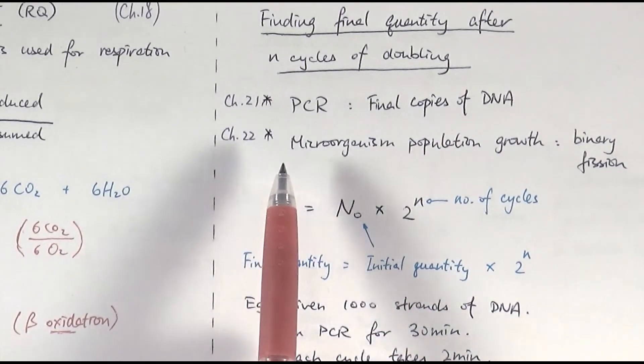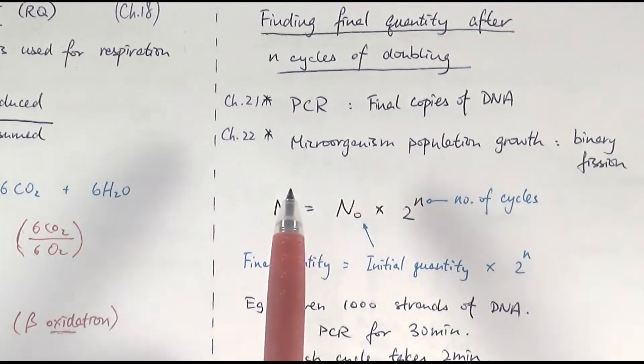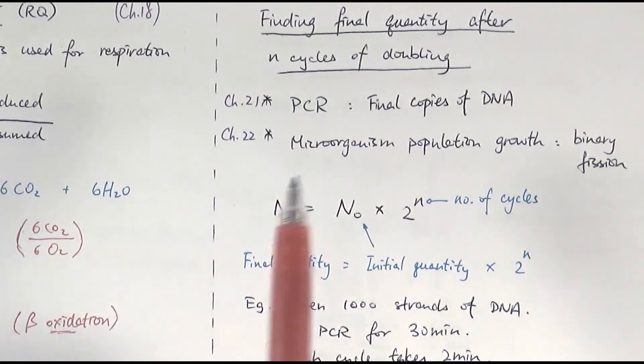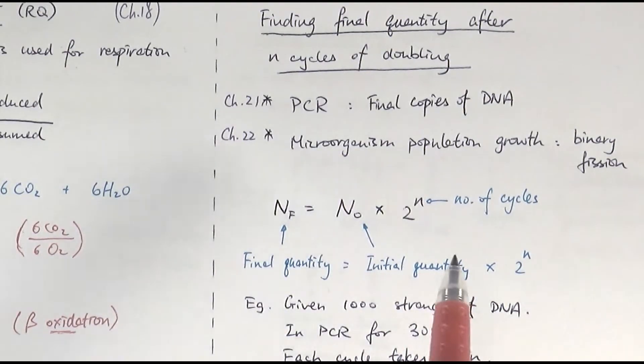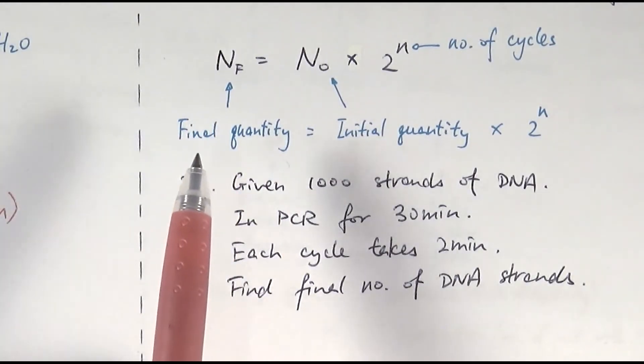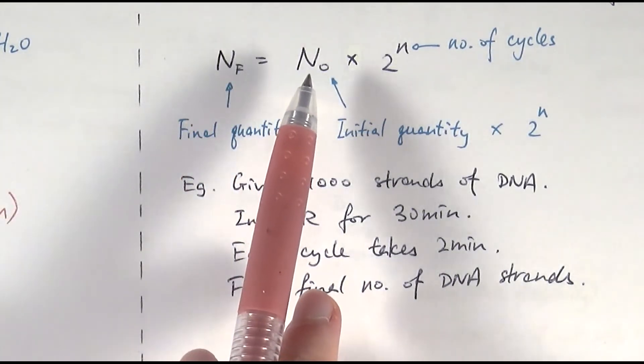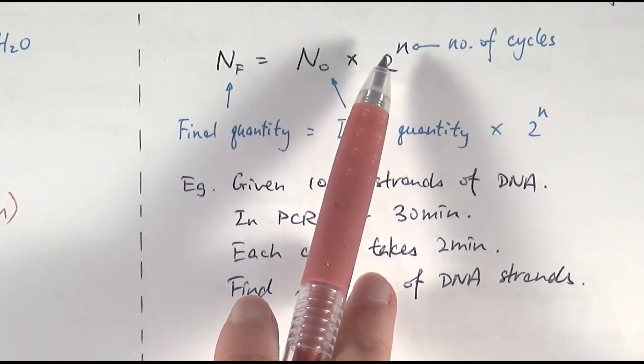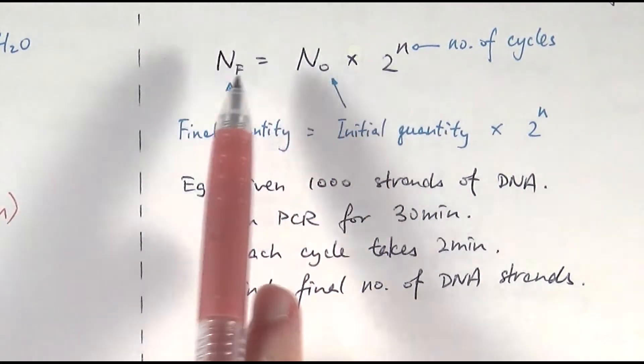And then in chapter 22, we would know about the standard growth curve, or we know that bacteria or microorganisms can grow exponentially. We can use this particular equation to calculate the number of microorganisms after a certain amount of time. Because we know that they divide by binary fission, meaning they double every single time by that method. So the equation that we have would be this one. So NF, simplified meaning the final quantity or final number equals the initial number, the original number times 2 to the power of n. So n means the number of cycles that the initial quantity had undergone to become this value.